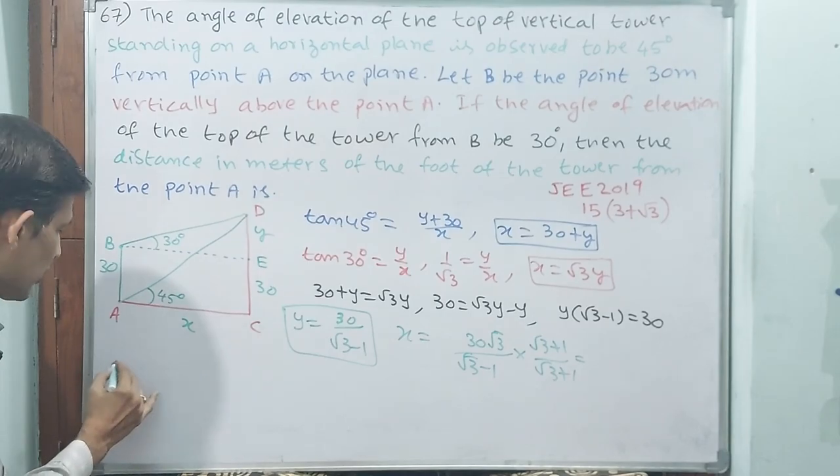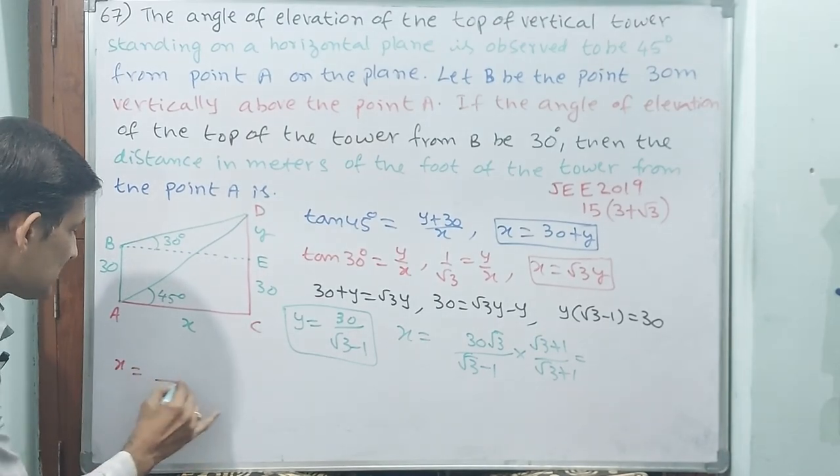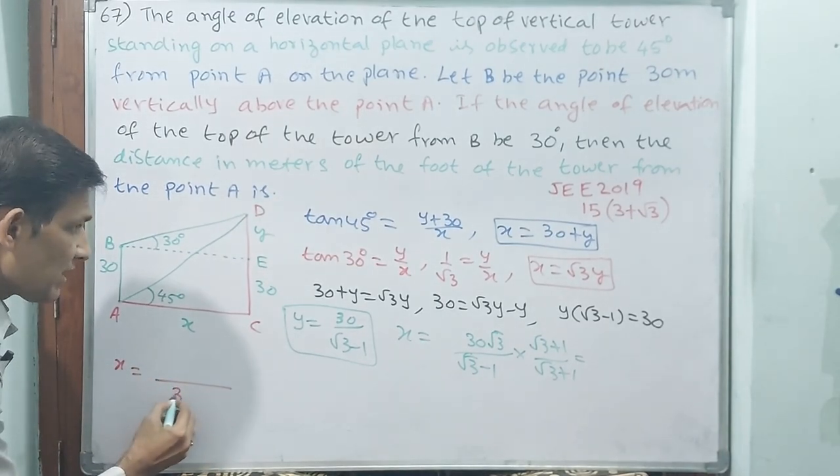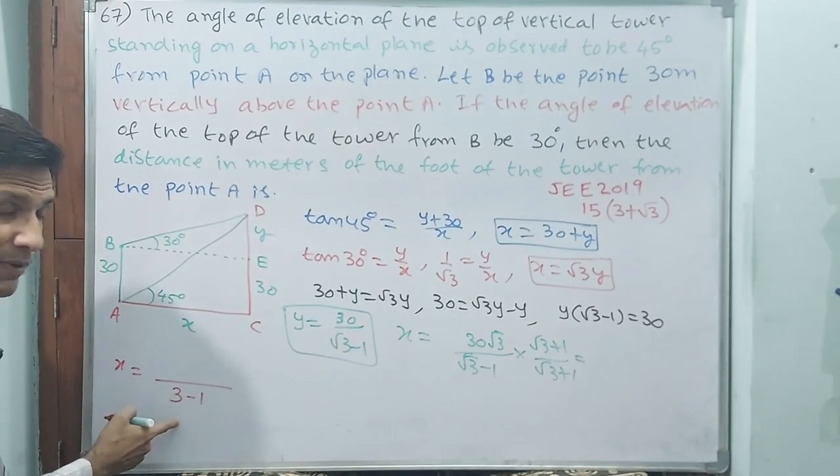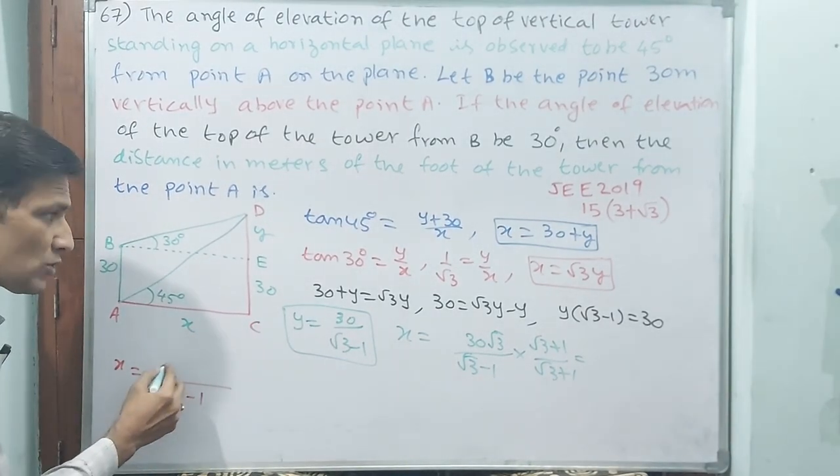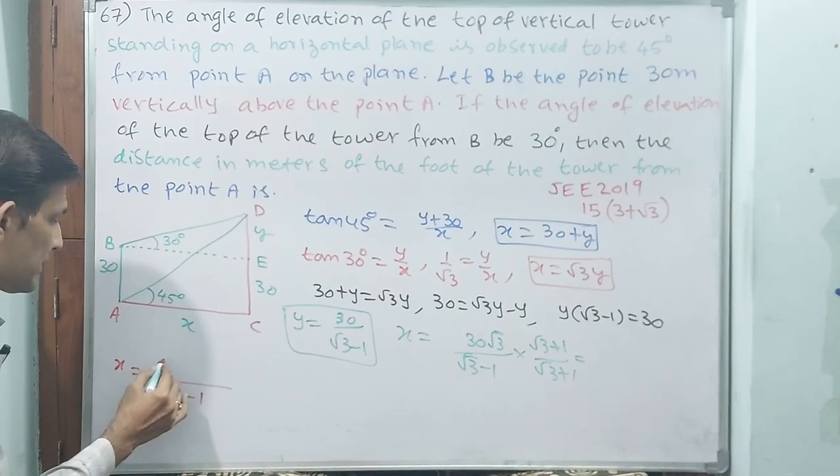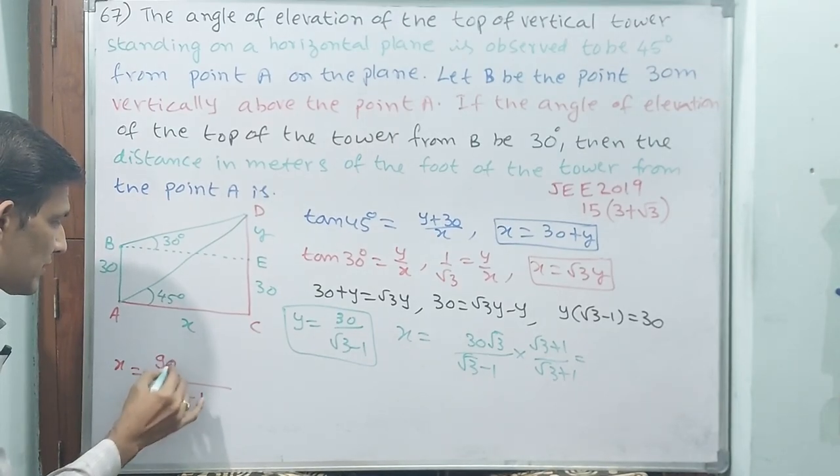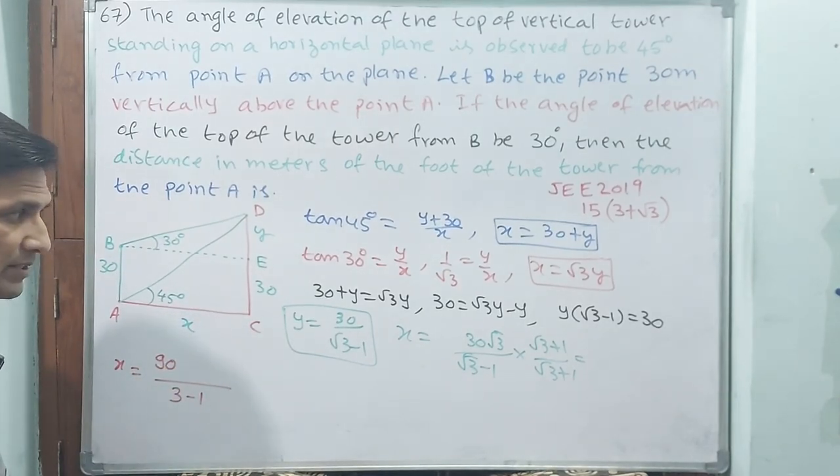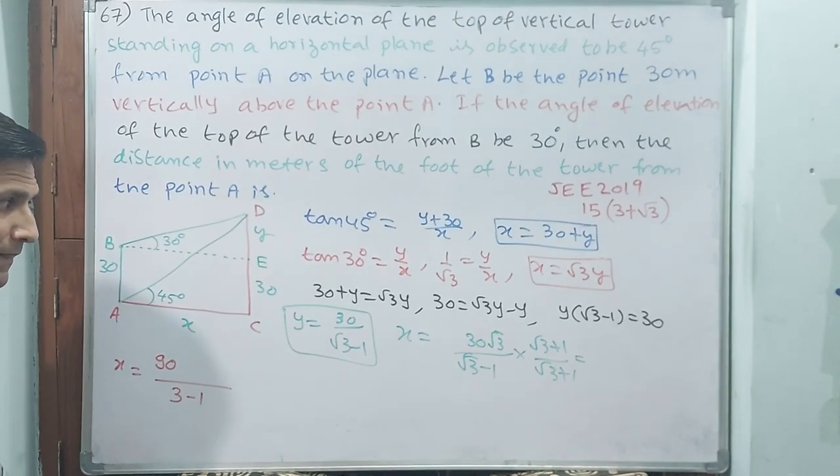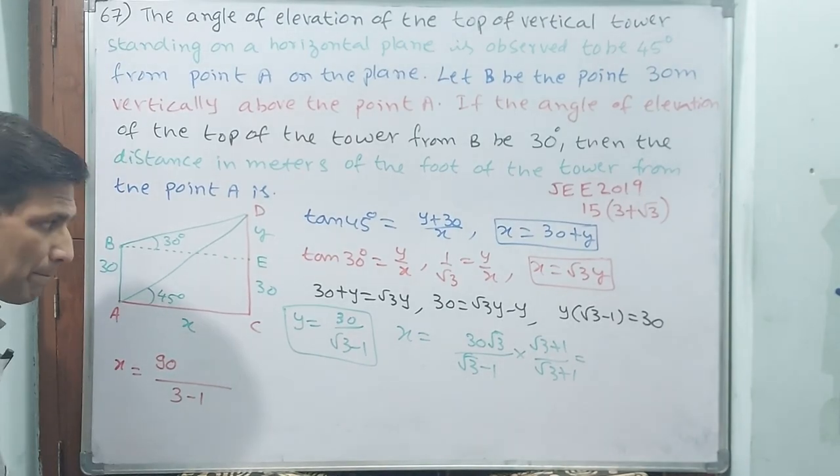Using a²-b², the denominator becomes 3-1, which is 2. See, 30√3 times √3 is 90. So 30 times 3 plus 30√3 in the numerator.